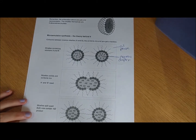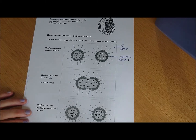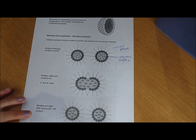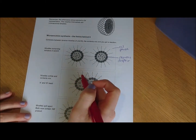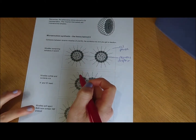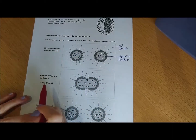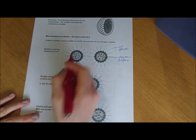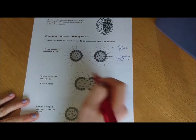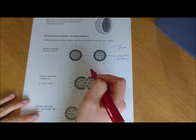Let's talk in this video about microemulsion synthesis and the theory behind microemulsion synthesis. For example, let's look at a system where we've got a water-in-oil microemulsion. We sometimes call these reverse micelles. These are our water droplets — our aqueous droplets in our oil phase.